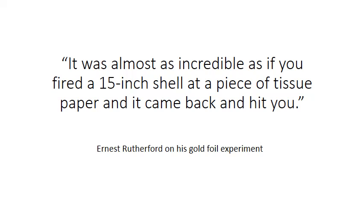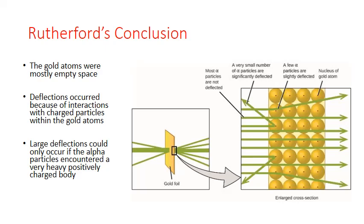Why was this so surprising to Rutherford? In order for most of the alpha particles to pass through the gold foil without deflection, they must have been passing through empty space without interacting with any other particles. This led to Rutherford's first conclusion: the gold atoms were mostly empty space. Deflections could occur when the positively charged alpha particles interacted with other charged particles inside the gold atom. For large deflections — like the alpha particle bouncing backward — the alpha particle would need to encounter a heavy, positively charged particle large enough to repel and bounce it backward. Since most of the atom appeared to be empty space, that positively charged body must be very dense, occupying a very small portion of the atom's volume.